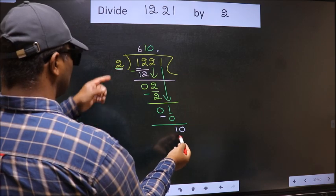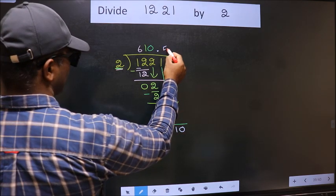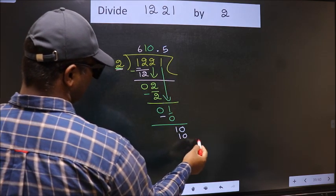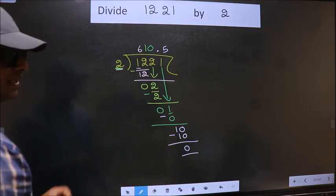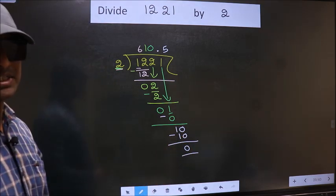So, 10. When do we get 10 in 2 table? 2 times 5 is 10. Now, we should subtract. We get 0. Did you understand where does the mistake happen? You should not do that mistake.